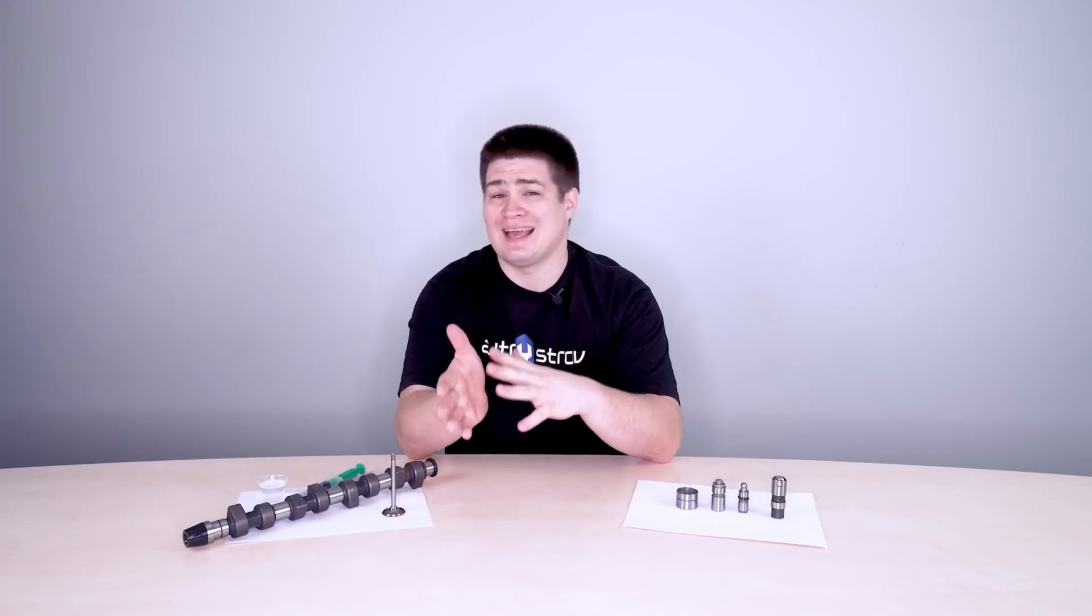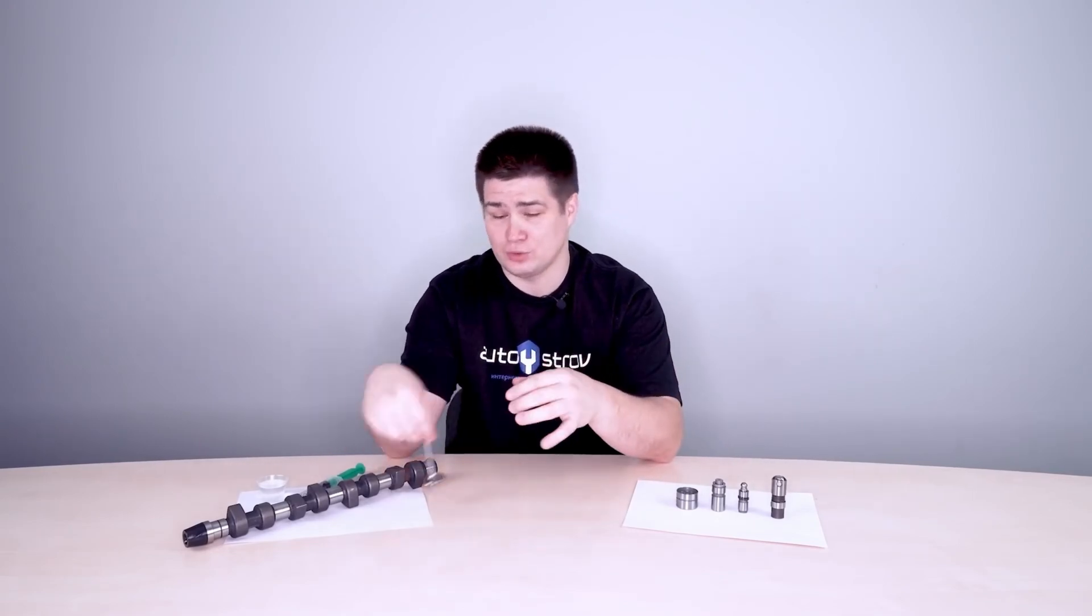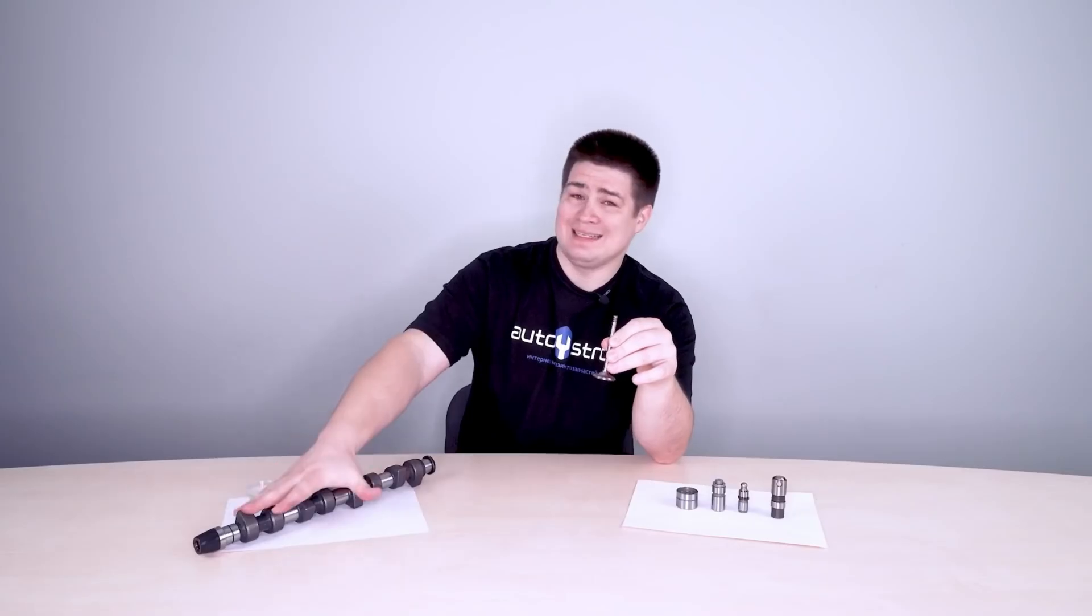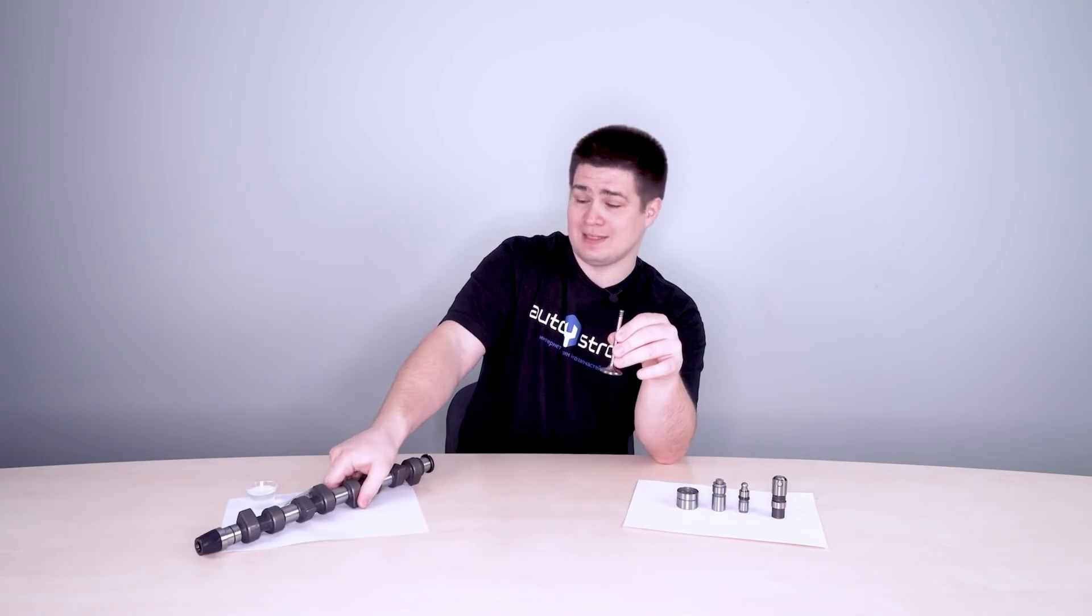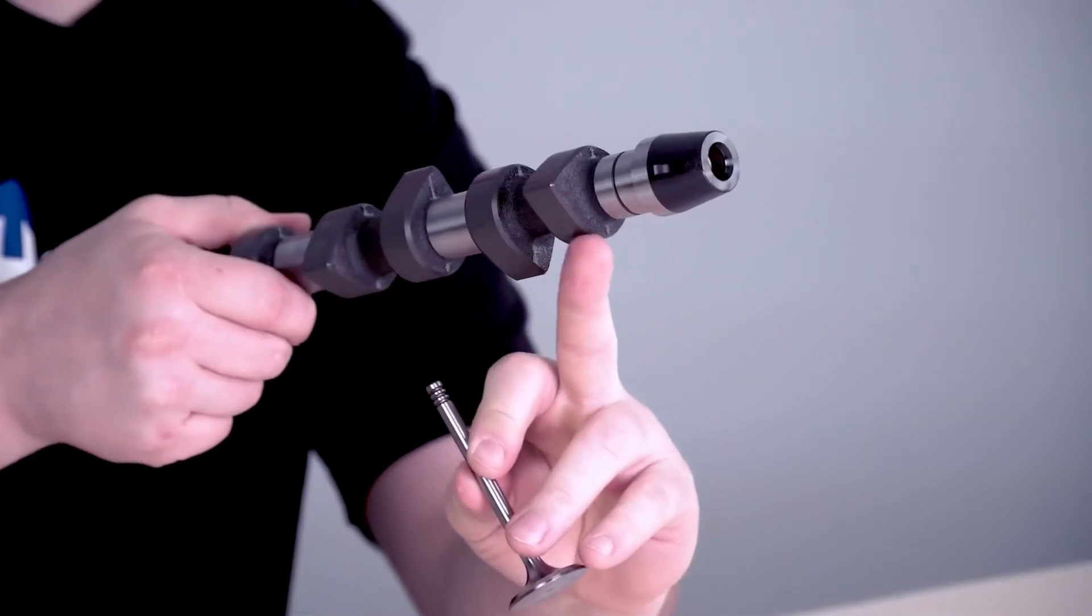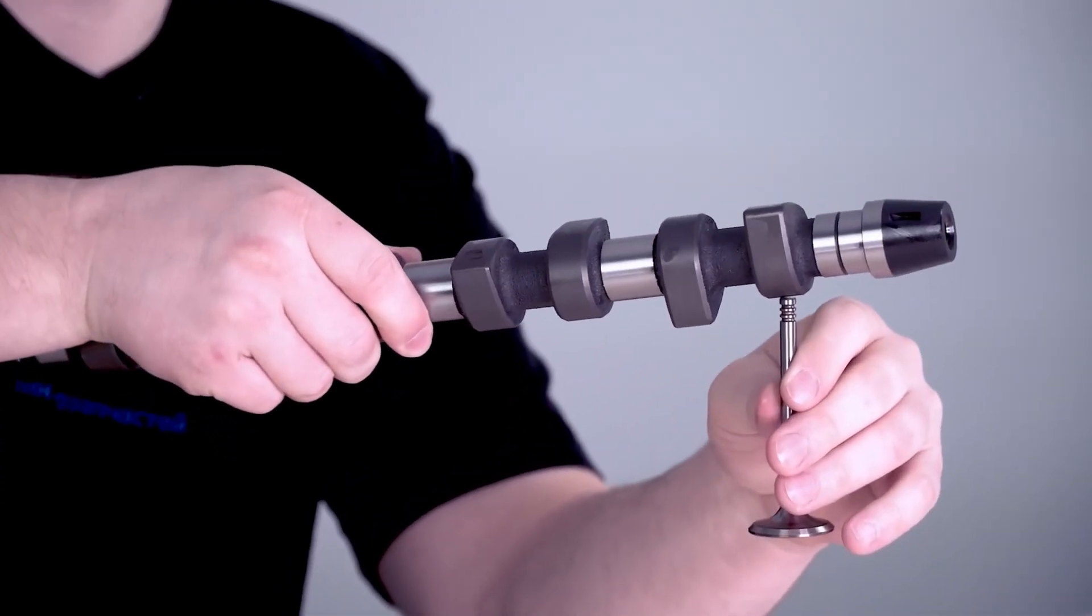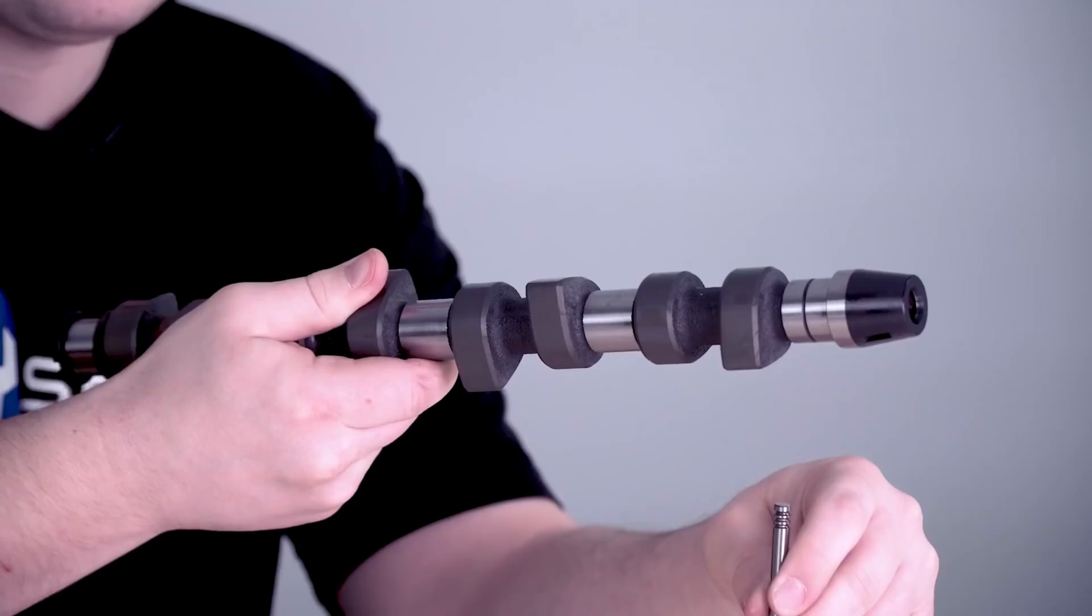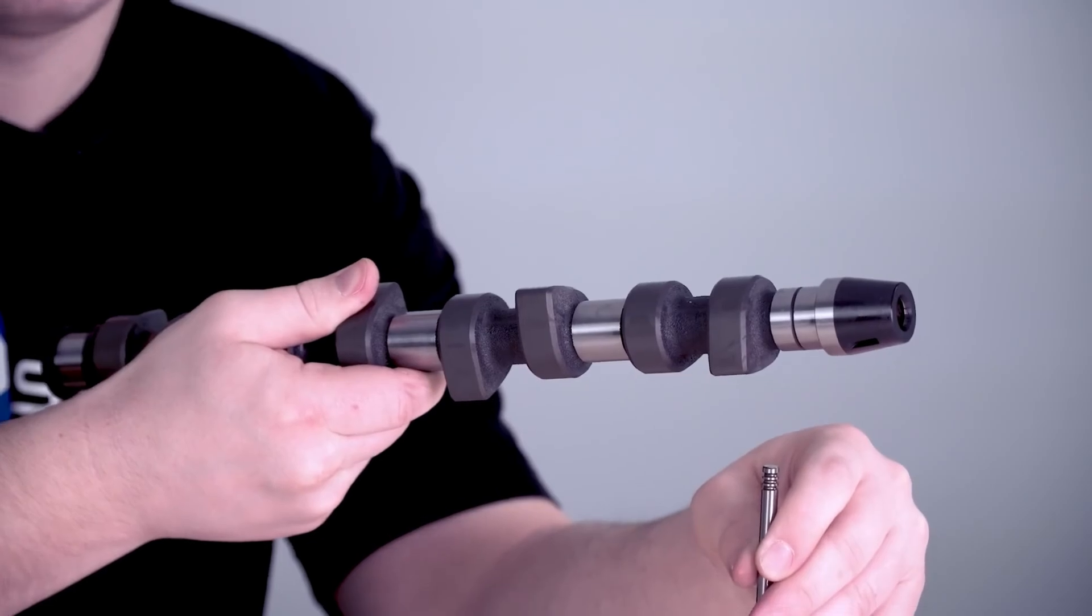As you know, there is a gas distribution mechanism inside the engine which is responsible for the opening and closing of the intake and exhaust valves on time. The valves themselves open directly with the help of camshafts. Here I have a sample. It has cams and when the camshaft rotates, the cams begin to act on the valve. The valve goes down and thus opens.